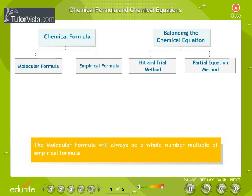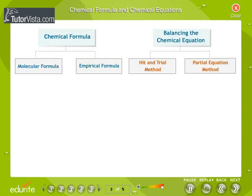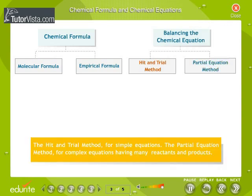The molecular formula will always be a whole number multiple of the empirical formula. The chemical equation symbolically represents a chemical reaction. According to the law of conservation of mass, the changes in reactants and products must always be balanced before and after the reaction. There are two methods to do this: the hit and trial method for simple equations, the partial equation method for complex equations having many reactants and products.